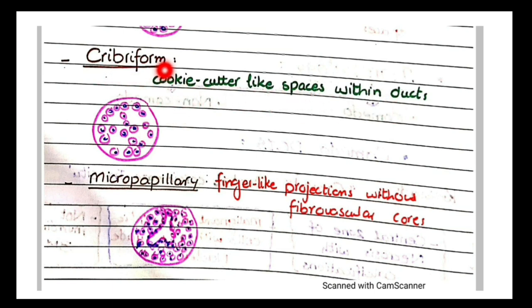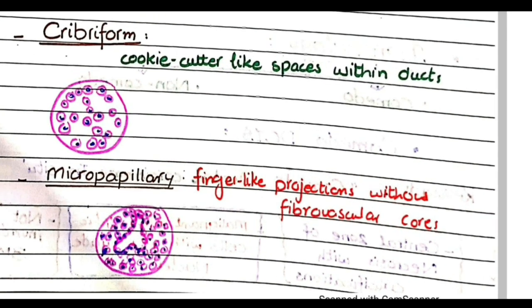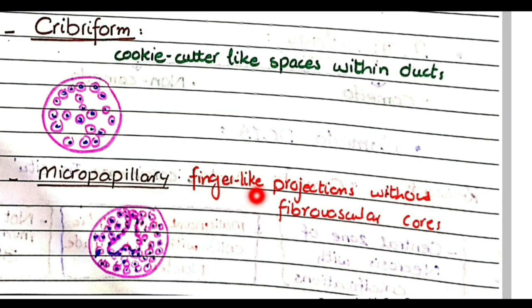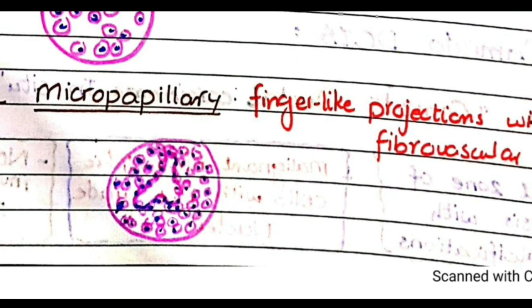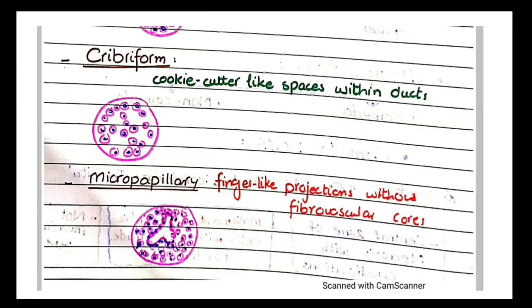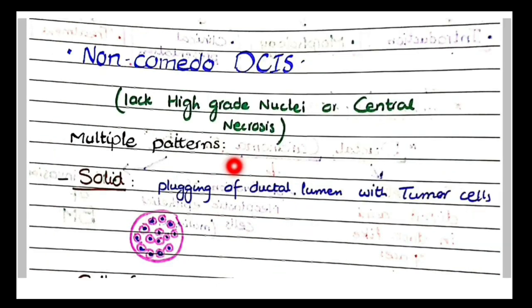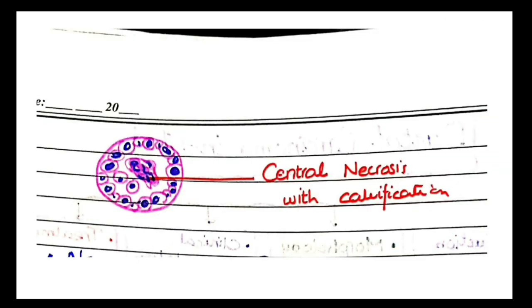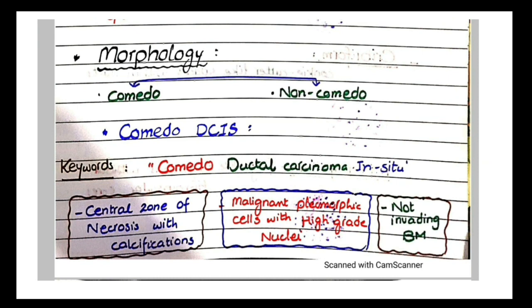Micropapillary means finger-like projections without fibrovascular cores. So solid, cribriform, and micropapillary are the presentations of non-comedoductal carcinoma in situ. The morphological hallmark of non-comedoductal carcinoma in situ is that they either lack high-grade nuclei or lack a central zone of necrosis — both of which were present in the comedo type of ductal carcinoma in situ.